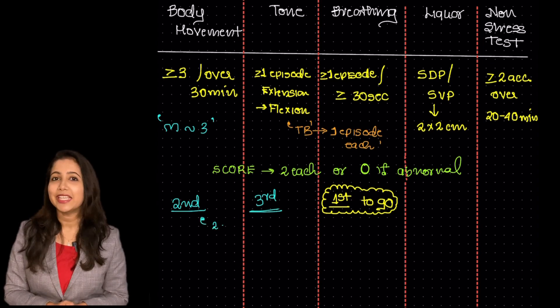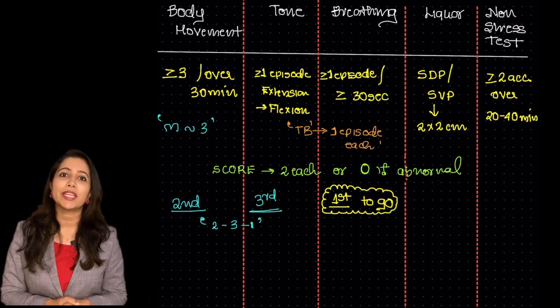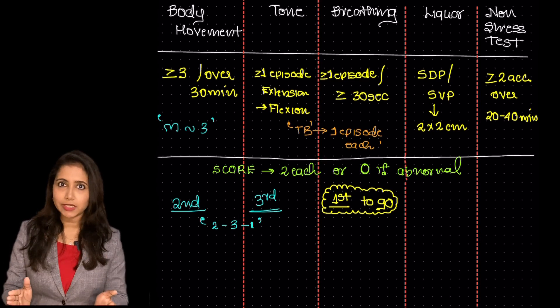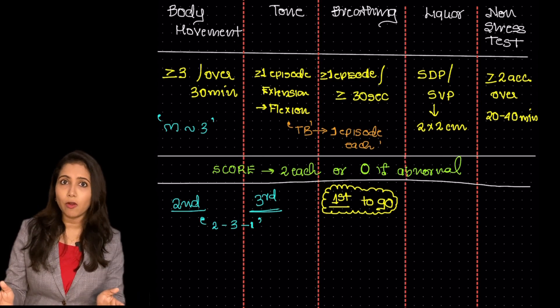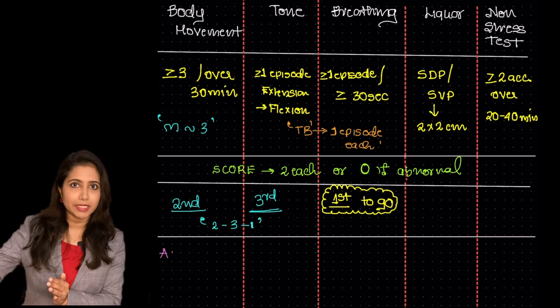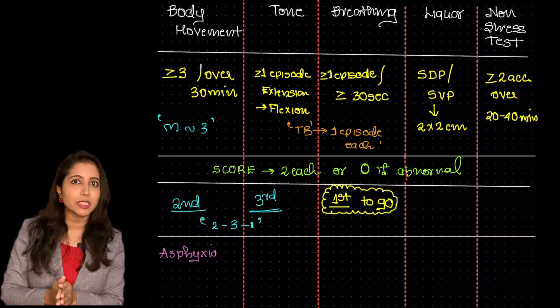One more important thing is that among these, all are suggestive of acute asphyxia or acidemia of the fetus. Whenever these parameters are abnormal, they are pointing towards acute acidemia or asphyxia of the fetus.